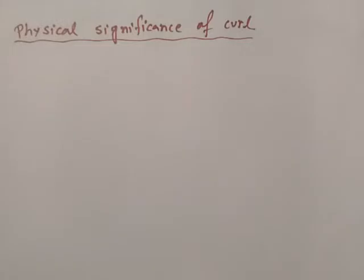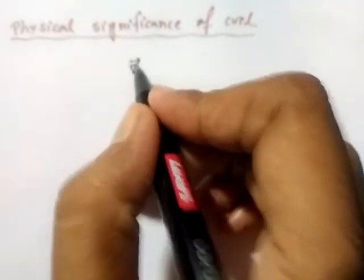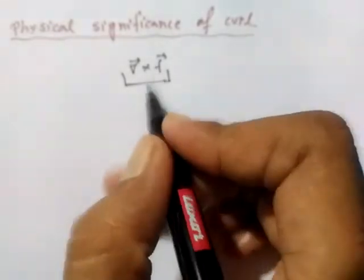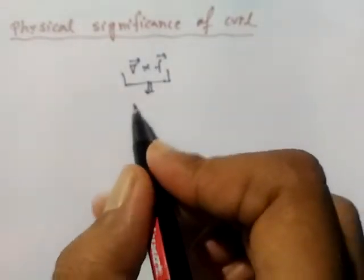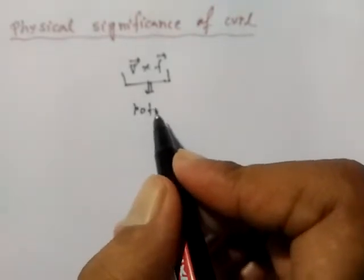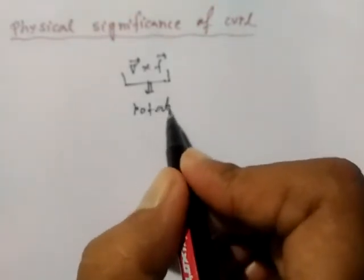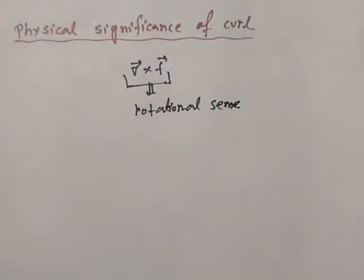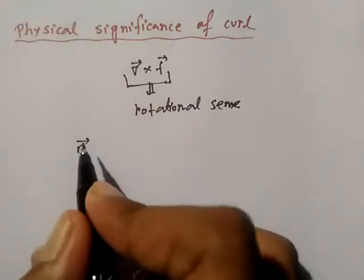Let me discuss the physical significance of curl of a vector point function — what physically means curl of a vector function. Curl of a vector function physically signifies the rotational sense. Let us take an example of a vector point function like B, which is known as magnetic field intensity or magnetic induction.